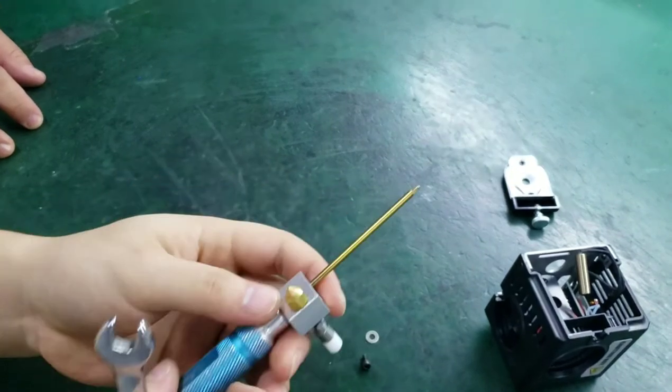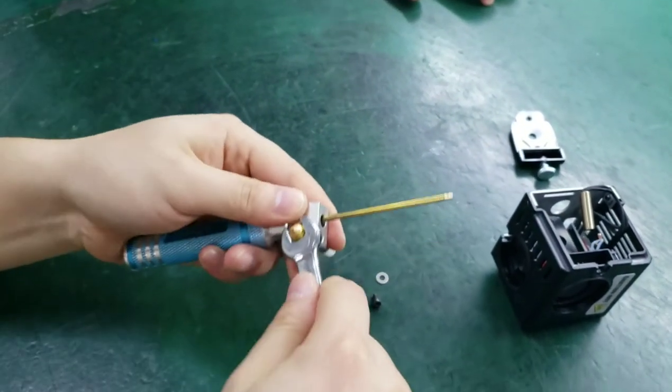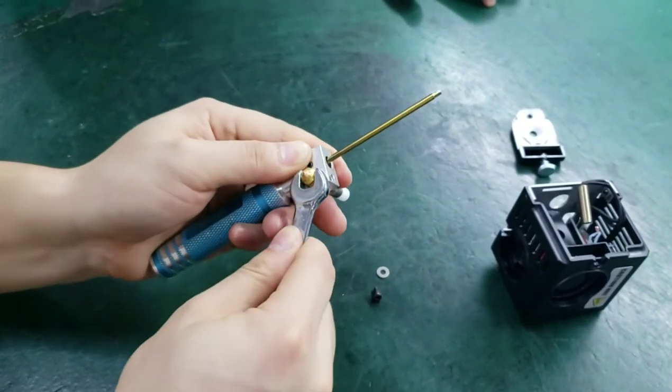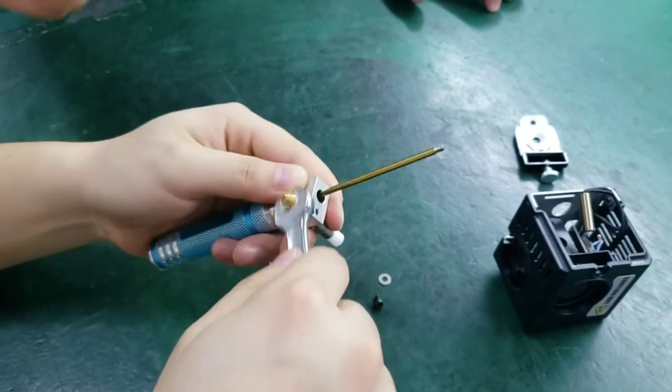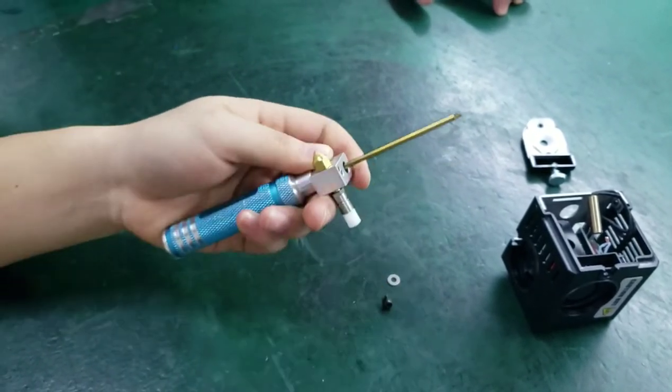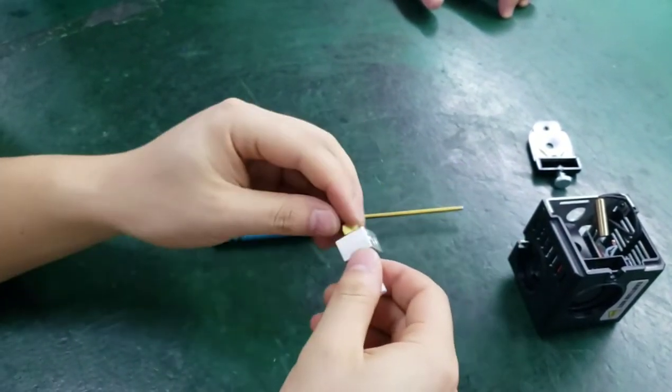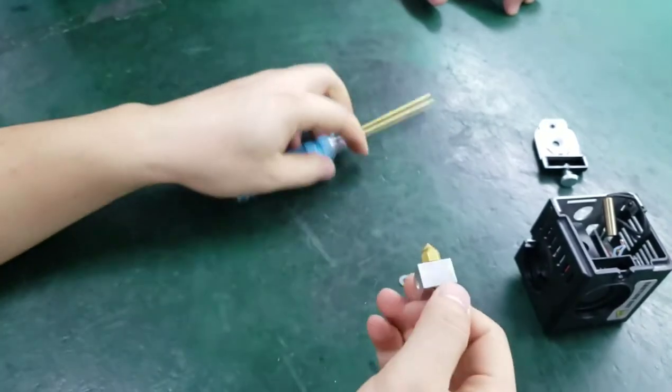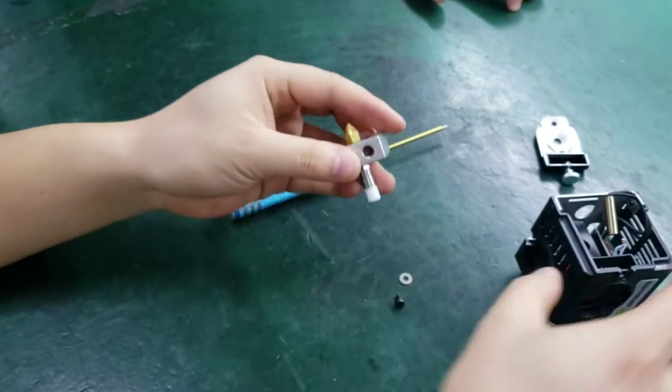And use one of the screwdriver and use Allen key to turn it up. To tighten it, you'll be very tight. So you use your hand to take it. It's not loose anymore.